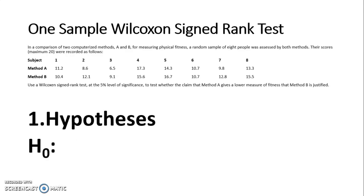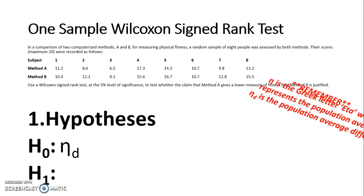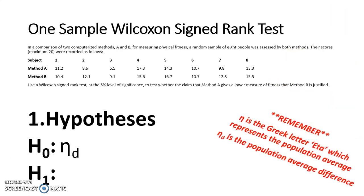We always have a H0 null hypothesis and H1 alternative hypothesis. For a Wilcoxon signed rank test, we use η_D. Remember that η is the Greek letter eta, which represents the population average, so η_D is the population average difference. Our null hypothesis is always that the population average difference is zero — there is no difference between the two methods in this case.